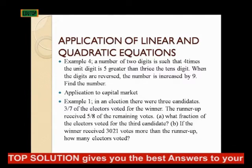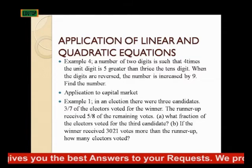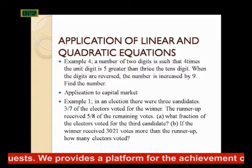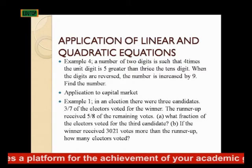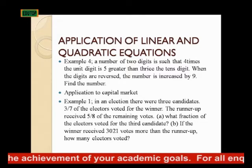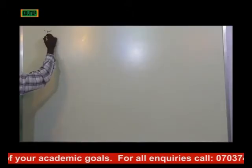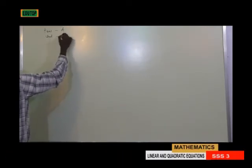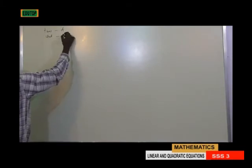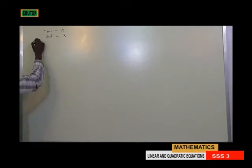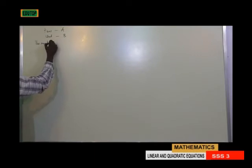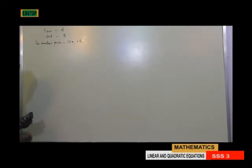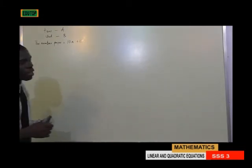Example 4: A number of 2 digits is such that 4 times the unit digit is 5 greater than 3 times the tens digit. When the digits are reversed, the number is increased by 9. Find the number. We have tens and units digits. Let the tens digit be A and the unit digit be B. The number proper would be 10A plus B, since A is tens and B is units.